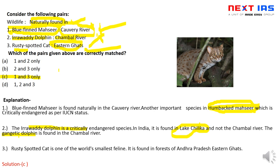Comment box में एक important species के बारे में बताएं: Dancing Deer — यह किस state में पाई जाती है, और इससे associated lake कौन सी है। उस lake का peculiar biomass भी है — उसके बारे में भी comment में लिखें।